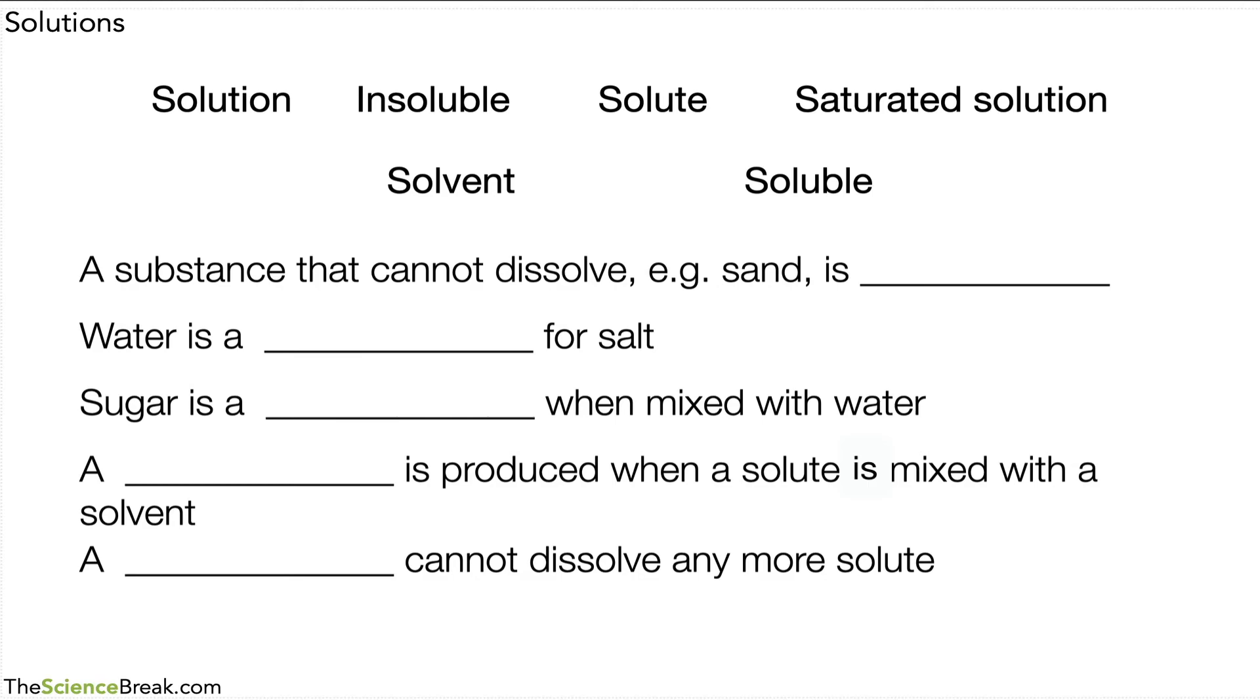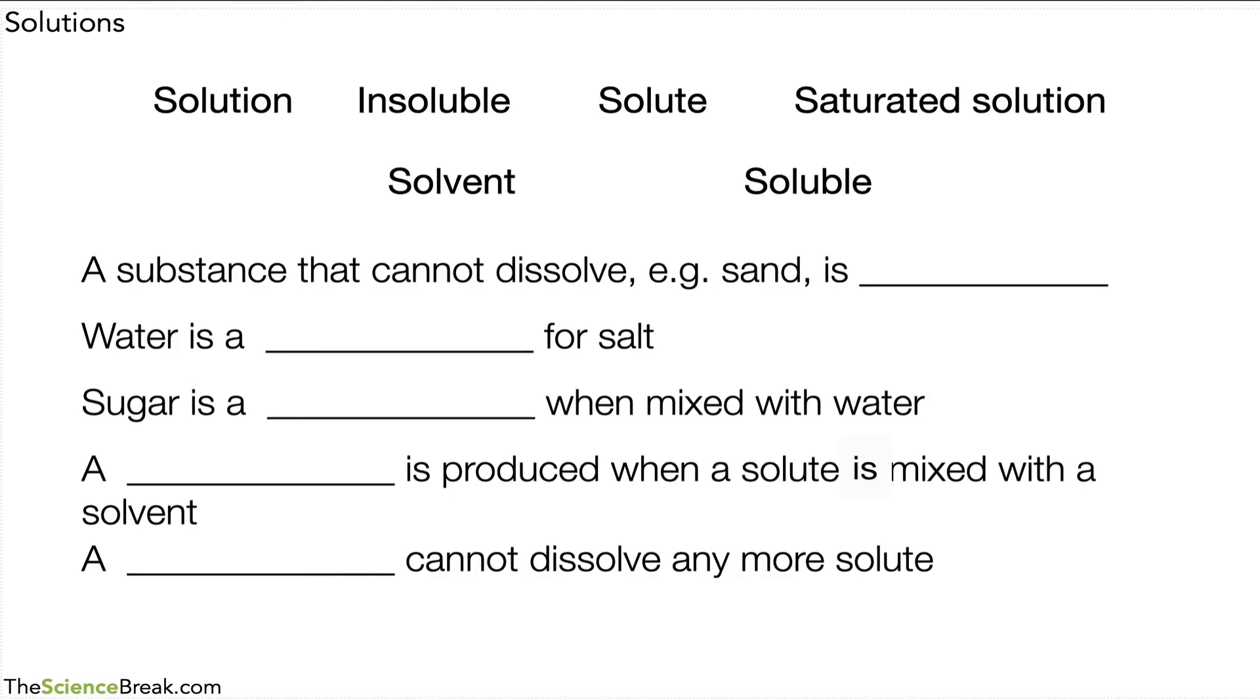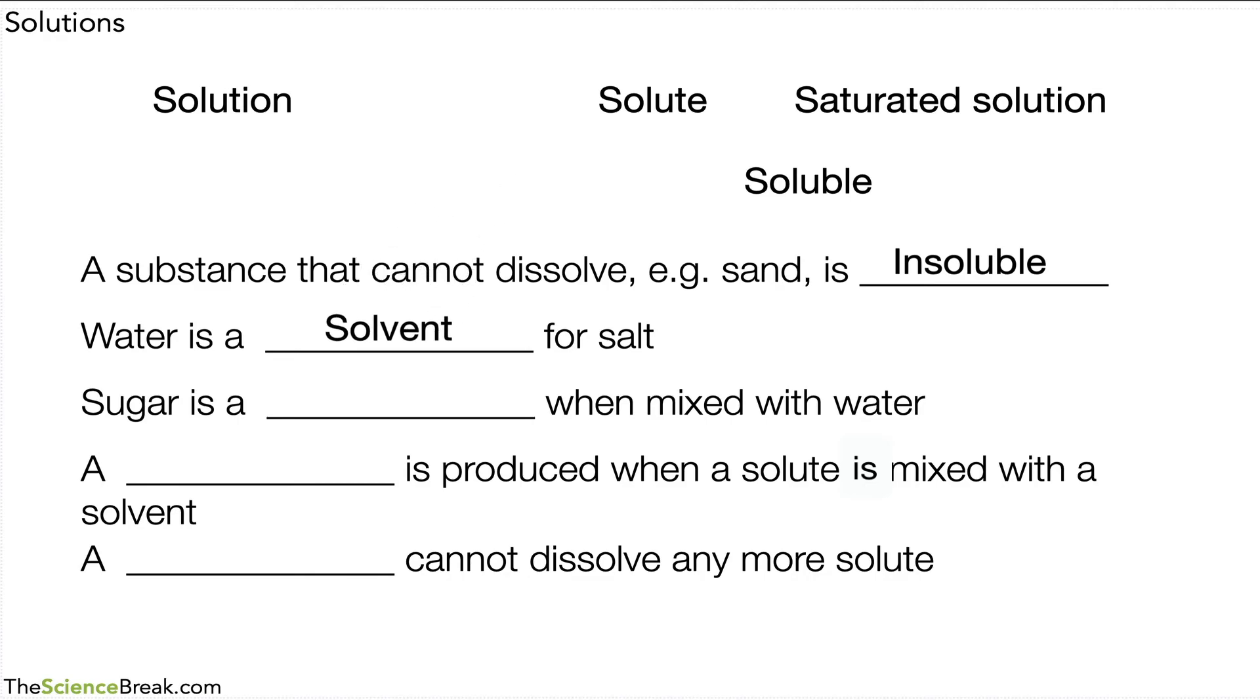Now, if that was a little bit tricky, here are the words, and you can slot them into the gaps. Remember, the gap doesn't have anything to do with the length of the word that goes in there, and there is one more word than you actually need. So let's go through the answers. The first one was insoluble. Water is a solvent for salt. Sugar is